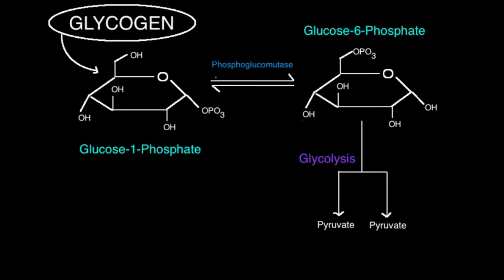Notice one thing: the phosphate is right here, on the one position of glucose — that's glucose 1-phosphate. But remember glycolysis does not directly use glucose 1-phosphate; it uses glucose 6-phosphate. So we have a problem — the glucose 1-phosphate really isn't any use to us. We need to isomerize it.